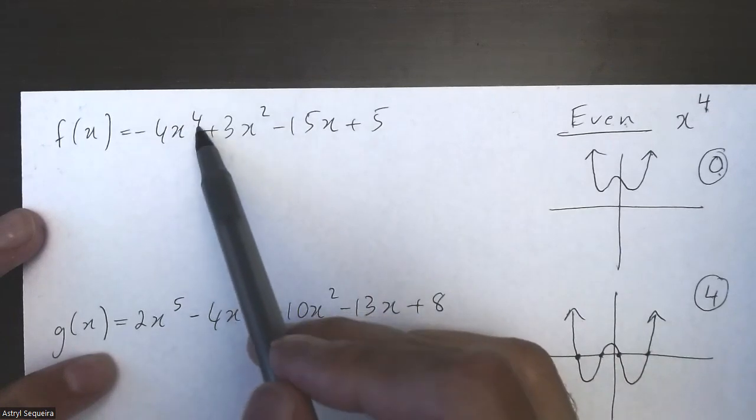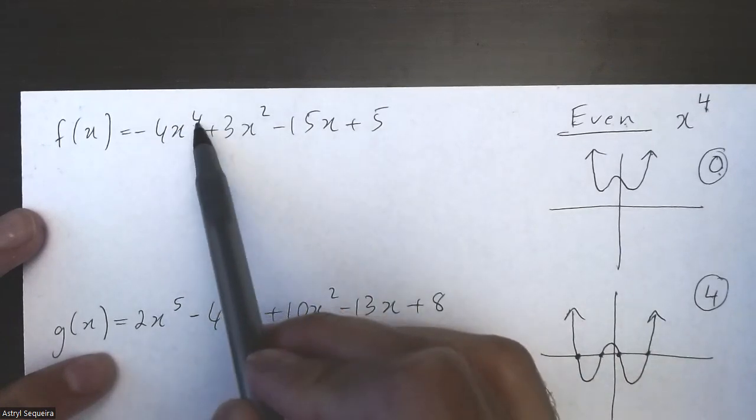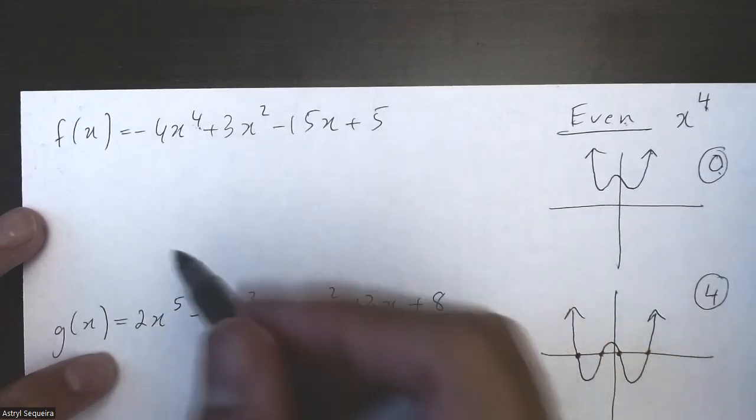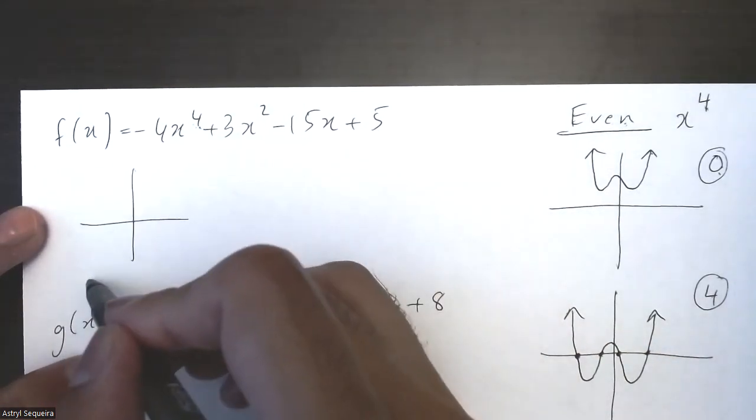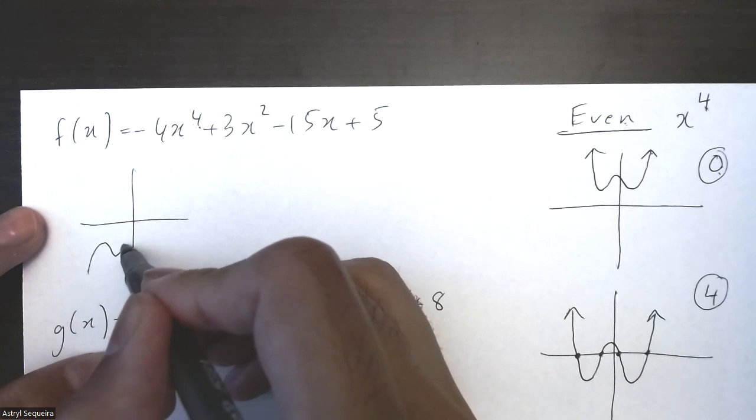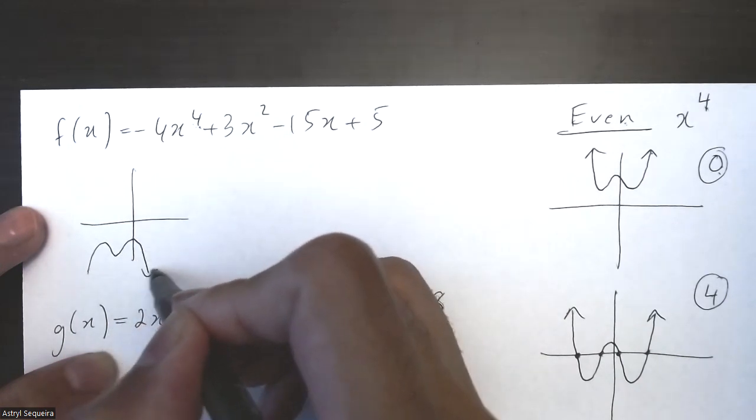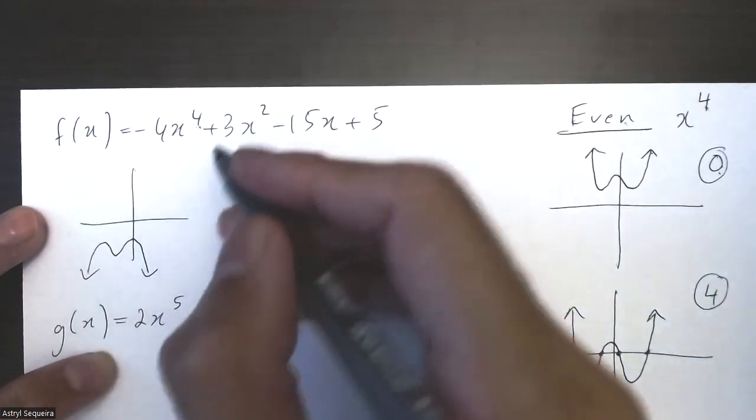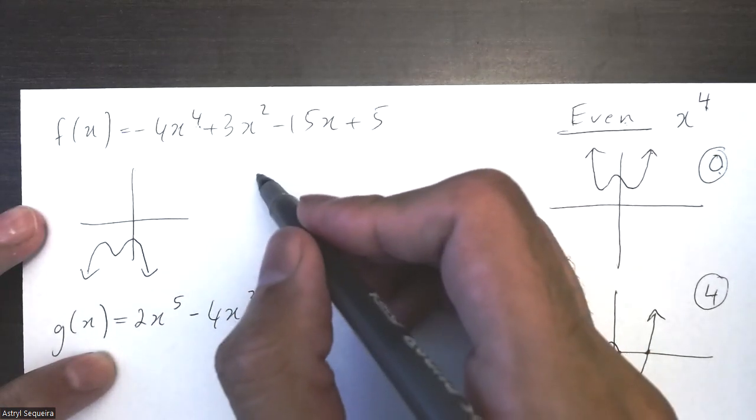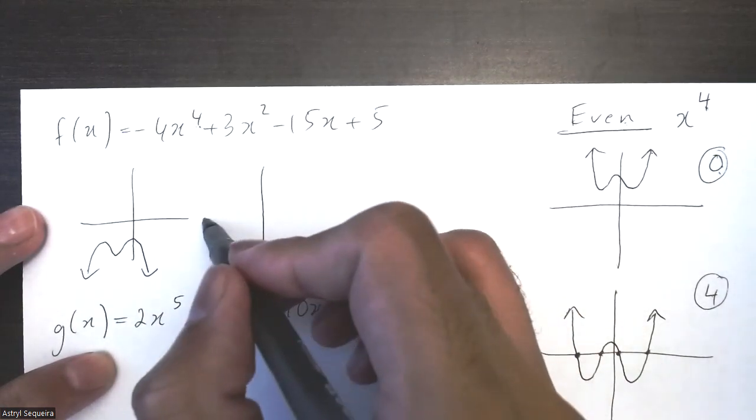So this is an even degree. It's negative as well, negative coefficient. So I know it's going to look something like that. That's my minimum number of zeros, which is just zero.